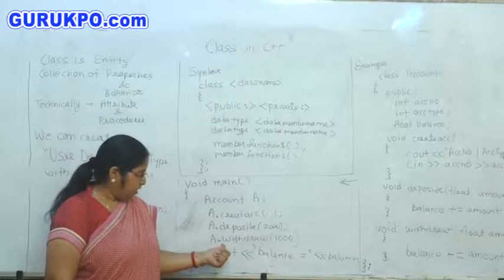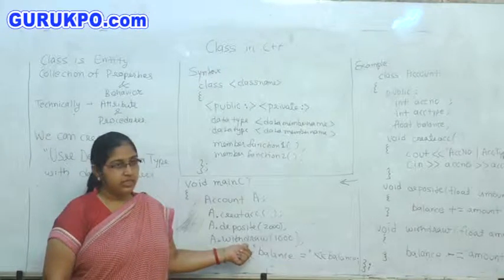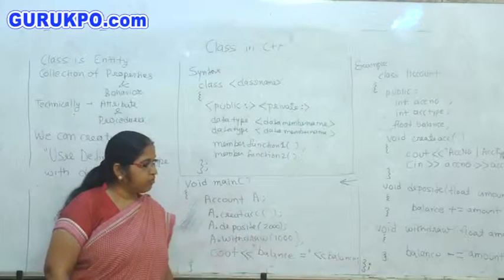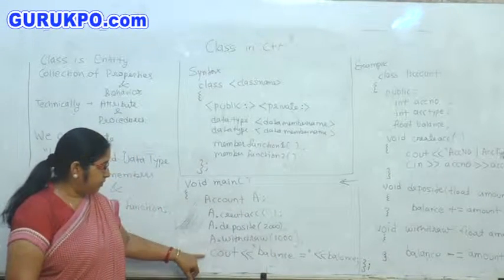After all, we call this withdrawal function and pass the value 1000 and it will decrement from balance variable.